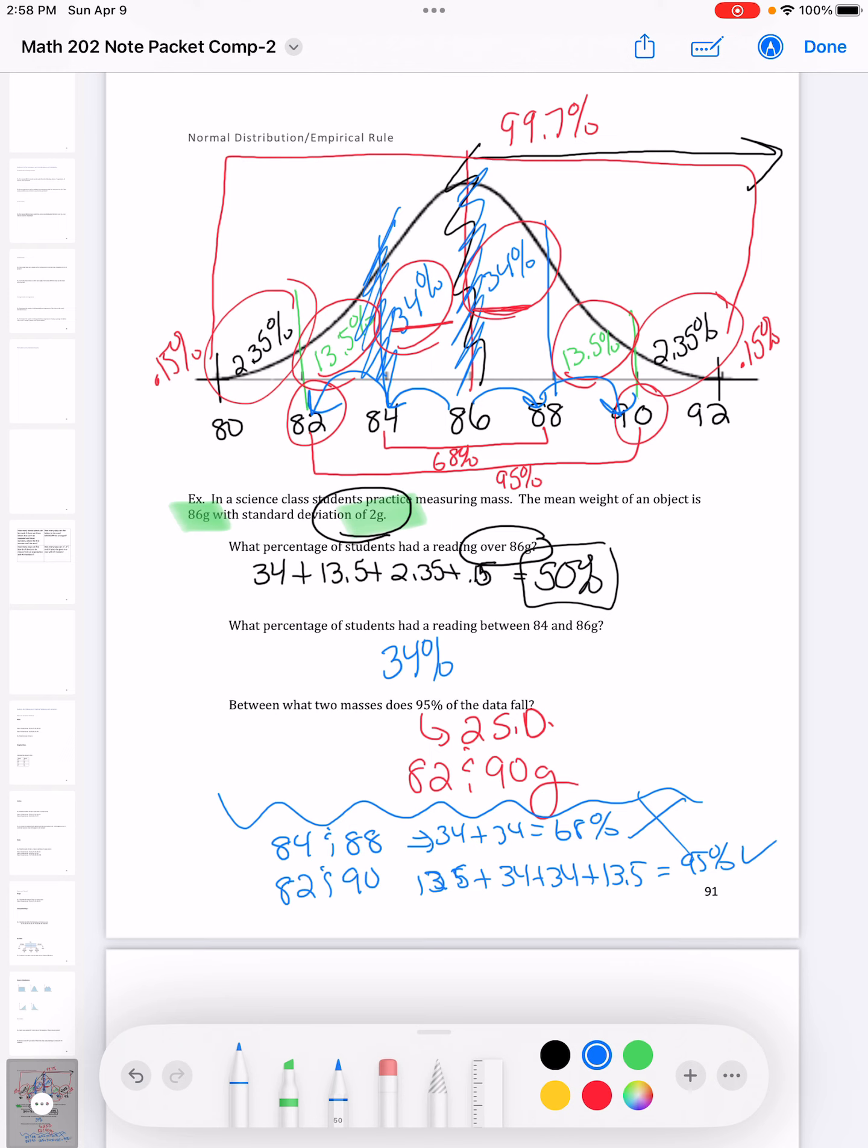And we already knew the answer there. So you can either learn there's three other percents or you can kind of do the trial and error. You always are going to be going out the same amount on the left and right to kind of really get at that symmetrical aspect of the empirical rule.